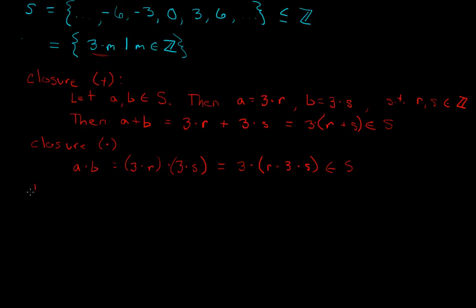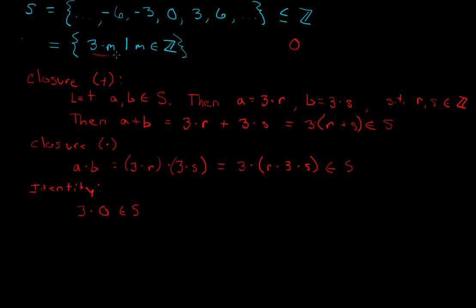We also need to show the additive identity is an element of the set. Since we're showing this is a subring of ℤ, we need to know what the additive identity of ℤ is — that's just zero. We need to show zero is an element of S. Well, S is the set of all 3 times some integer, and zero is an integer, so 3 × 0 must be an element of S by its very definition. And since 3 × 0 = 0, zero is an element of S.